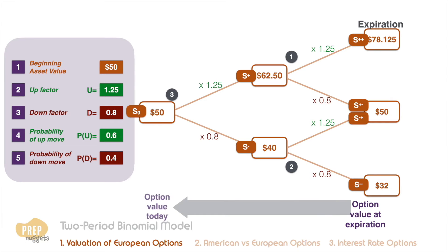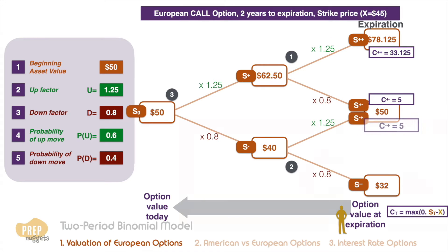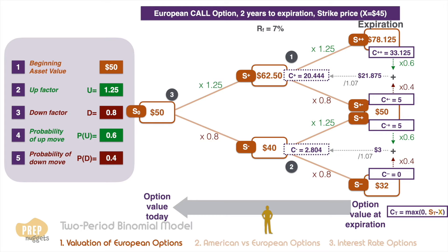We work backwards until we get the value of the option today. For a European call option with two years to maturity and strike price at 45, the value at expiration would be the maximum of zero and the spot minus strike price. These are the various possible values at expiration for the call option. Let's first calculate the value of the call option at this node, which follows exactly what we've learned for the one-period binomial model. Based on the probabilities of up move and down move, we have the expected value of the call option, discounting it back using a discount rate of 7%, giving a value of 20.444.